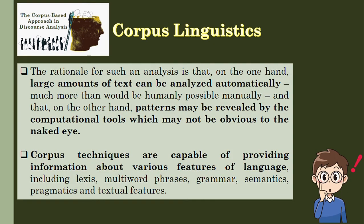The rationale for such analysis is that large amounts of text can be analyzed automatically, much more than would be humanly possible manually, and that patterns may be revealed by computational tools which may not be obvious to the naked eye. Corpus techniques are capable of providing information about various features of language, including lexis, multi-word phrases, grammar, semantics, pragmatics, and textual features. The different features of analysis using a corpus-based approach will be presented next.